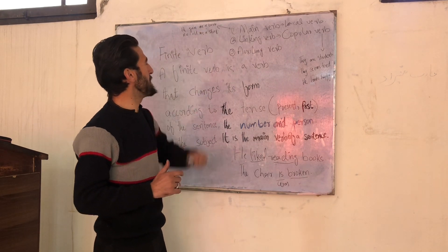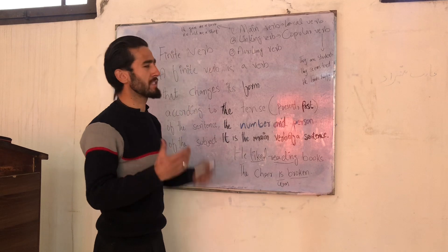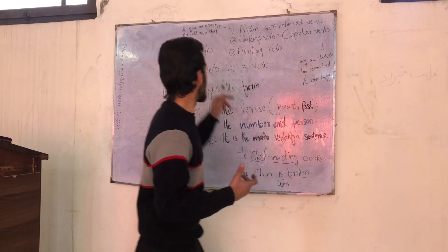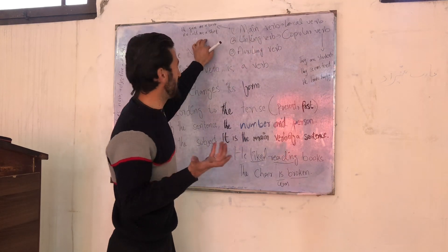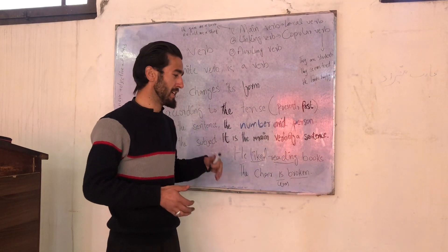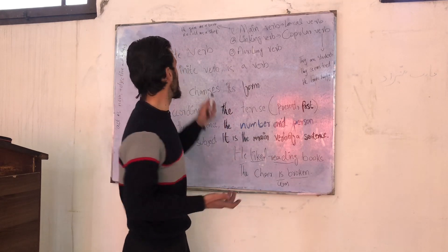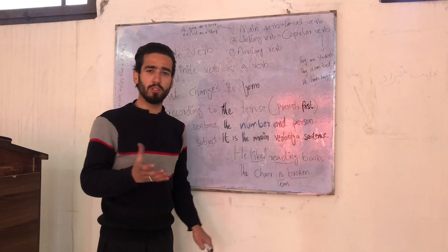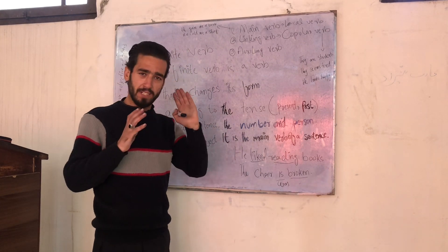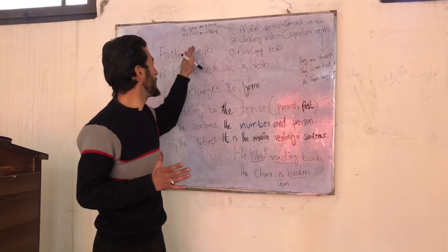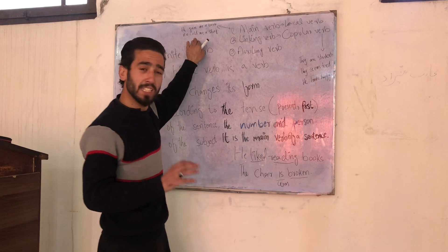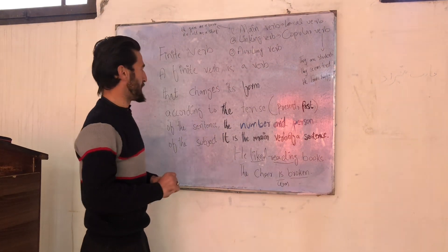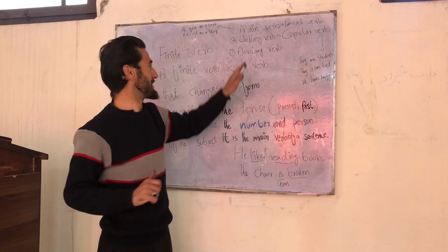He gave me a book. 'He' is the subject. 'Gave' is what he did — 'gave' is the main verb, the principle verb of the sentence. Another example: 'It told me a story.' 'Told' is the past form of 'tell' — it is the main verb. The main verb is the principle of work in the sentence.